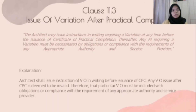Clause 11.3 - Issue of Variation after Practical Completion. The architect should ensure instruction of a Variation Order (VO) is in writing before the issuing of the Certificate of Practical Completion (CPC). Any VO issued after CPC is deemed to be invalid. Therefore, that particular VO must be included with obligation or compliance with the requirements of any appropriate authority and service provider.